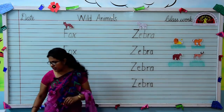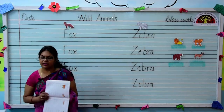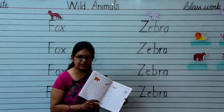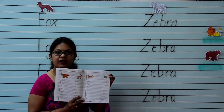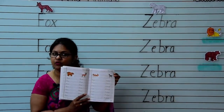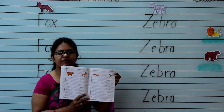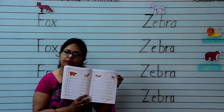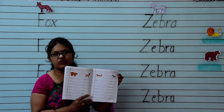So kids, do practice in your general awareness workbook page number 33. Color the pictures beautifully and don't forget to revise the previous topics also. Bye-bye, have a good day.